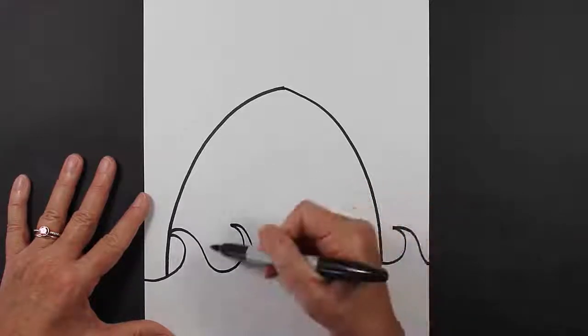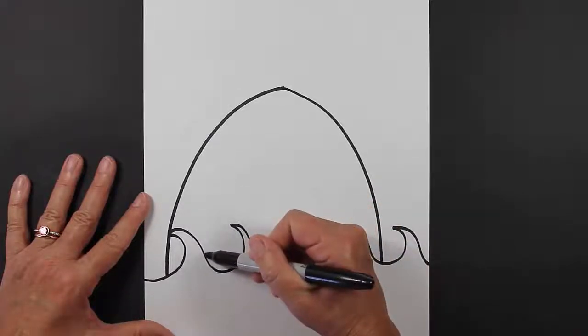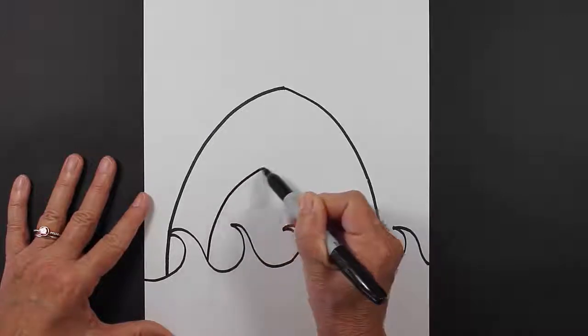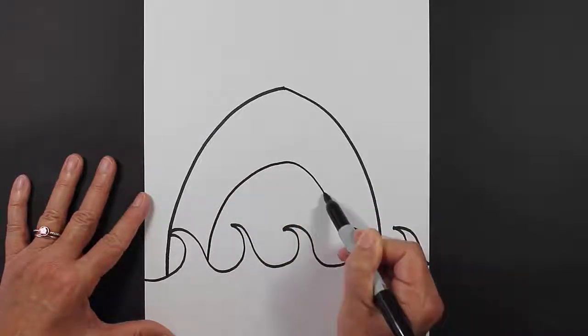So to make a big, wide, open mouth, we're just going to make an upside-down U. So I'm going to go like this, and then I'm going to come down.